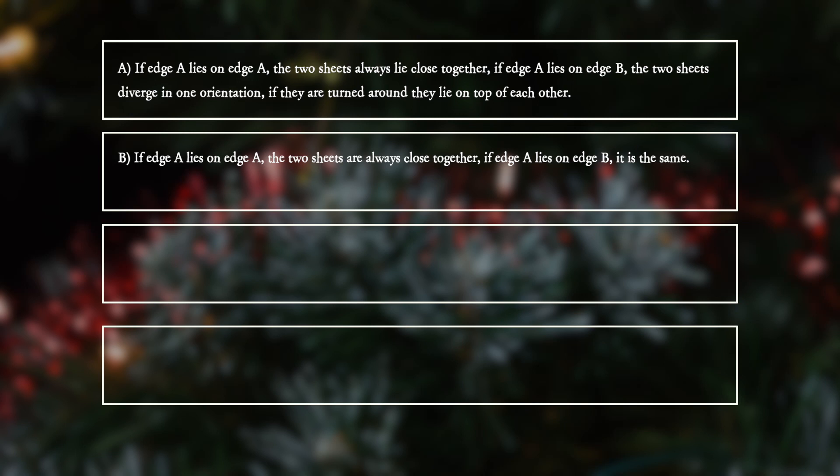Option B: If edge A lies on edge A, the two sheets are always close together. If edge A lies on edge B, it is the same.